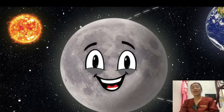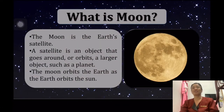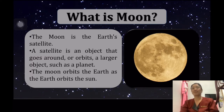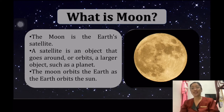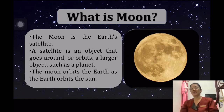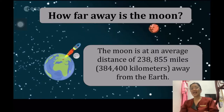Our lesson for today is about the moon. Who can tell me what is the moon? What is the shape of the moon? Circle — yes, very good. The moon is Earth's only natural satellite, at about one-quarter the diameter of the Earth. It is the fifth largest satellite in the solar system and the largest satellite relative to its major planet.